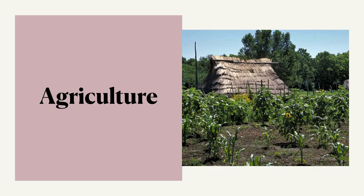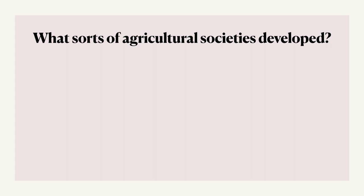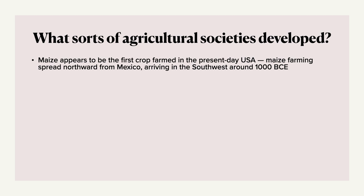Something else they left behind is evidence of their agriculture. We do know that maize appears to be the first crop farmed in the present-day U.S. — maize being a type of corn. Maize farming spread northward from Mexico, where it originated, and arrived in the southwest United States roughly around 1,000 B.C.E. — that's over 3,000 years ago.